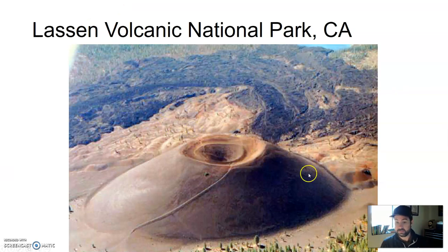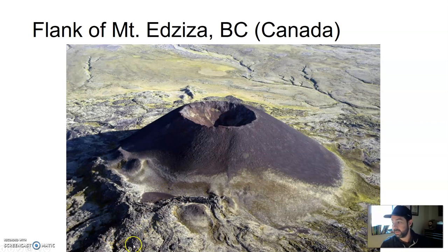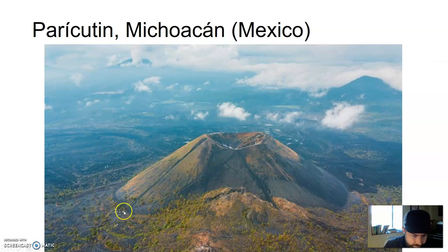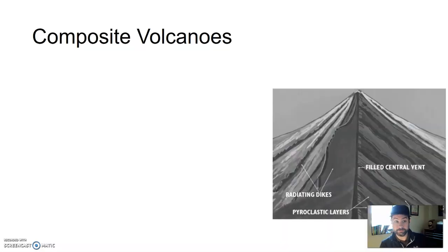Lassen Volcanic National Park in California — this is a cinder cone volcano, very cone-shaped. You can see the resulting lava flow. The flank of Mount Edziza in British Columbia — here's another cinder cone volcano, very cone-shaped with the resulting lava flow that came after. Oftentimes you can find these volcanoes on the flanks of larger composite volcanoes, just another vent that material is coming out of. And then Paricutín in Mexico — cone-shaped with a volcanic field afterwards. They're very accessible; you can climb them, maybe a thousand feet tall or a few hundred feet. They are very common as far as volcanoes go.